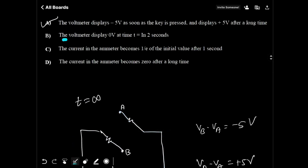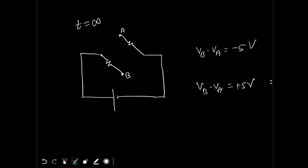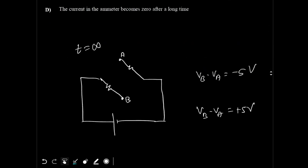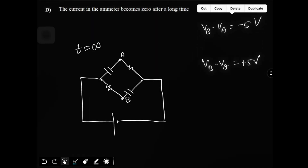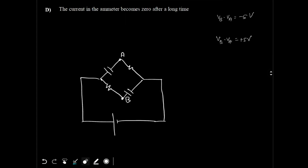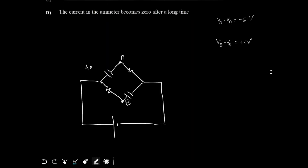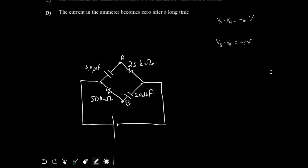Now we need to check option B: the voltmeter displays 0 volt at time t equal to ln 2 seconds. For that, we need to find the time constant of the circuit. We can ignore the battery and just look at the resistors and capacitors. We have 40 microfarad with 25 kilo ohms in one branch, and 20 microfarad with 50 kilo ohms in the other branch. Each branch is directly connected to the battery and has its own independent current.